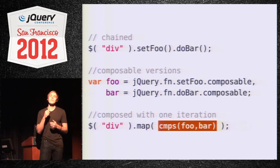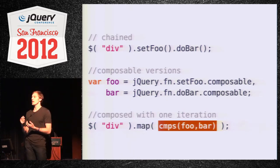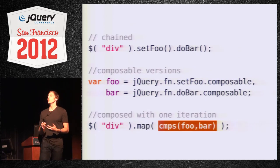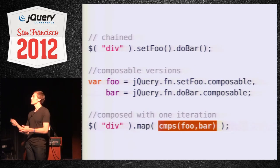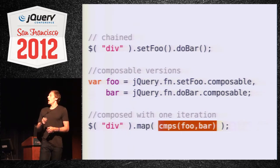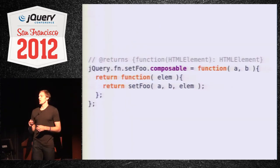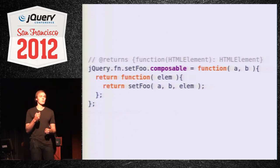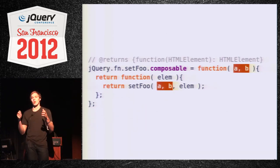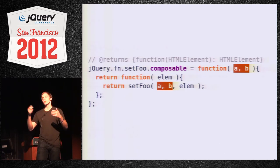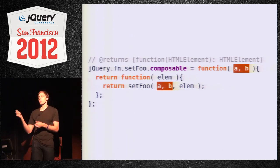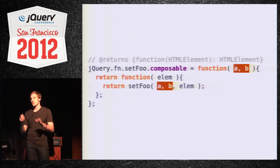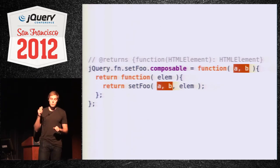In reality it probably has to be a little more complex — you likely need to partially apply some arguments, since most jQuery methods require some input: a selector, a string, some information. To get that composable thing out, you need to partially apply those arguments. There's more to this, and there is concrete stuff you can get into here.